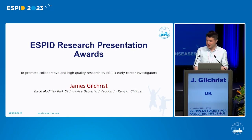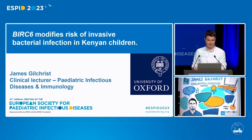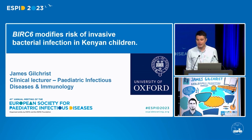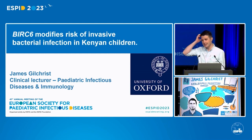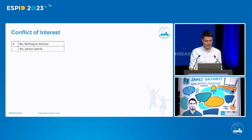Thank you for giving me the opportunity to share these data again. My name's James, I'm a PhD trainee in Oxford. What I'm going to try and cover for the next five minutes is a little bit about how we've been thinking about how you can try and define human genetic correlates of invasive bacteria and disease in Kenyan children.